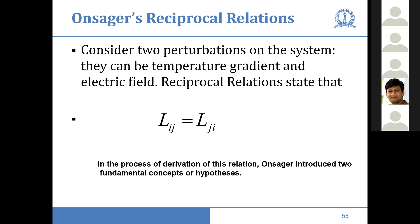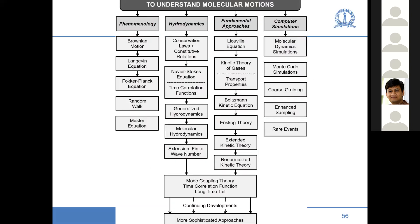I'll not do the proof of the Onsager reciprocal relation here; I can do it later with much greater ease using the time correlation function formulation. With the modern time correlation function approach, things can be much, much simpler. The modern statistical mechanics combines hydrodynamics and kinetic theory of gases. The modern framework was not there when Einstein, Langevin, and Smoluchowski did their work. And now, of course, computers have come, and people think they don't need to learn the first three foundational columns. But I beg to differ — you do need some parts of that foundation, otherwise you won't be able to think.